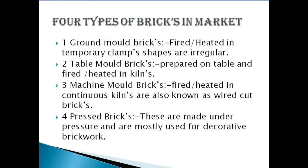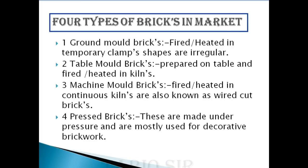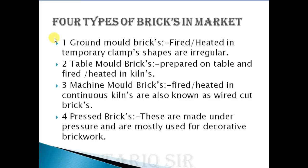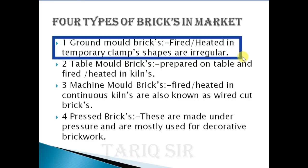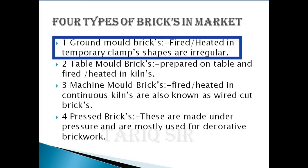Coming back to the types of bricks available in the market, there are mainly four types. The first is ground moulded bricks, as we saw in the video. These are known as ground moulded bricks because they are made on the ground. They are fired or heated in temporary kilns. Their shapes are normally irregular — as you saw, they were not made with a lot of precision and not much compaction was provided. Hence these bricks are quite irregular in shape.